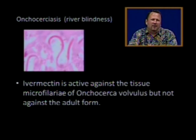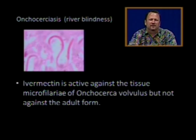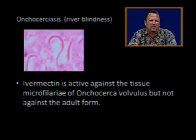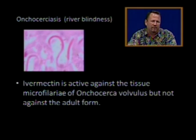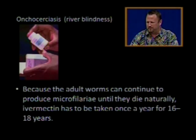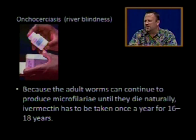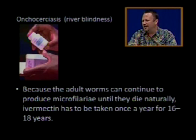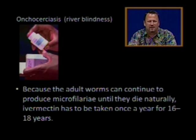The key thing to know about onchocerciasis and treatment with ivermectin is that the drug is active against tissue microfilariae — the larvae of the Onchocerca volvulus roundworm — but does not work against the adult form. Because the adult worms continue to produce microfilariae until they die naturally, ivermectin must be taken once a year for 16 to 18 years.